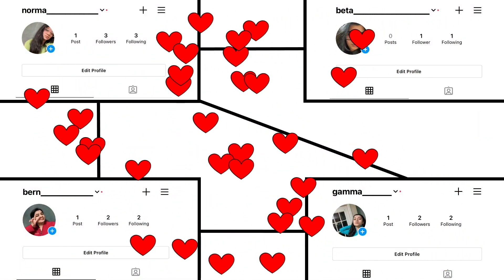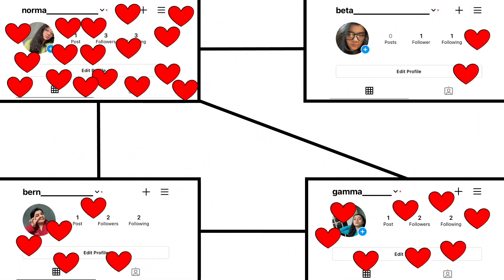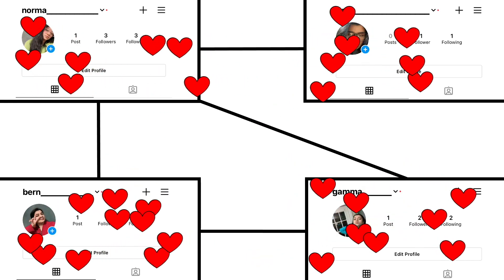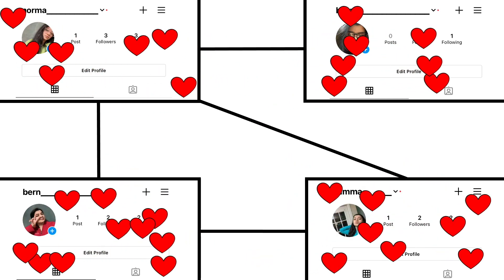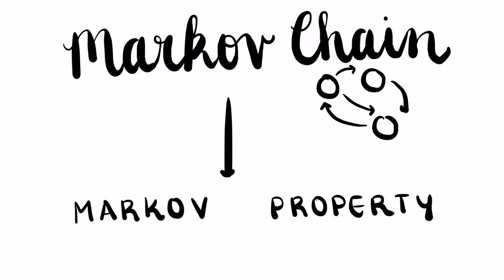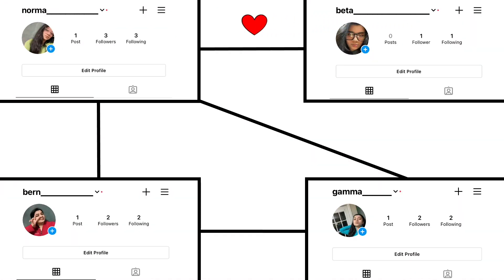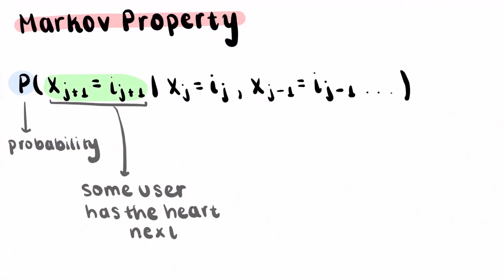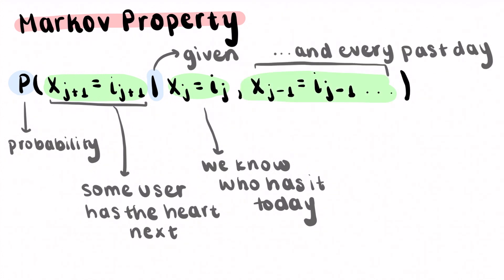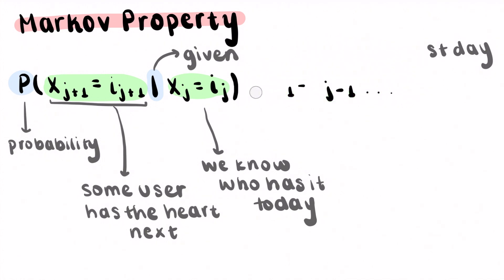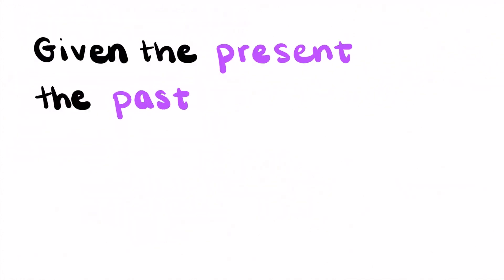In a sense, the 32 hearts are freely circulating from user to user, with each user randomly deciding who to send their hearts to next. This is called a Markov chain, named as such since it obeys the Markov property. Let's follow the journey of a single heart for now. By the Markov property, the probability that some user has the heart a day from now, given that we know who had the heart every day since the founding of Drabstagram, doesn't change if we only look at who has the heart now. In other words, given the present, the past is independent of the future.